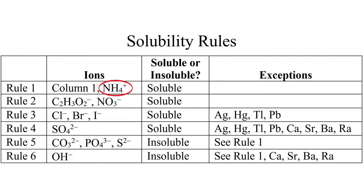Next, all compounds that have an anion of nitrate or acetate are soluble, no matter what the cation is. That takes care of another huge number of compounds. So far these rules are pretty easy to remember, but unfortunately the rest of the solubility rules have exceptions.